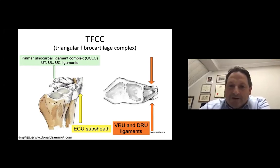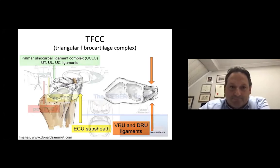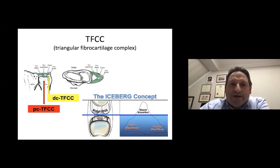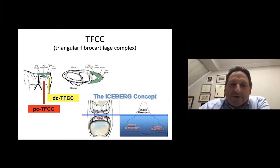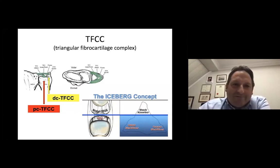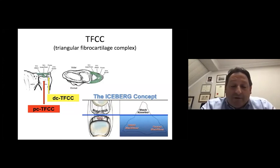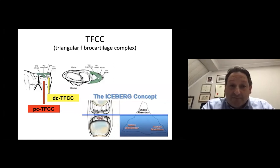On the right side, you see the volar and the dorsal radio-ulnar ligaments. Assessing the ulnar attachments of the TFCC, the most relevant one from a functional point of view in terms of stability is the deep attachment, also called the proximal component or PC of the TFCC. The distal component, DC, is the less relevant one. However, an injury to this attachment still causes pain and can cause minor instability, sometimes not compatible with the patient's activities. Therefore, you need to treat it if needed.